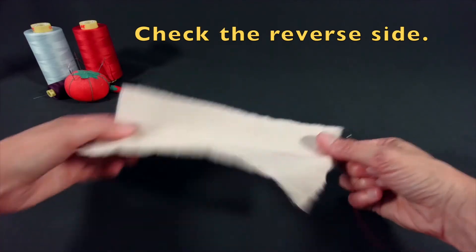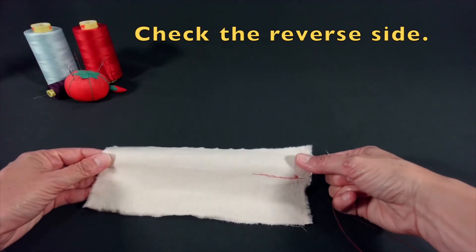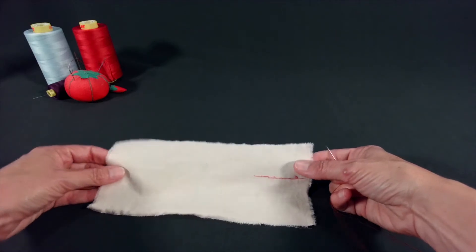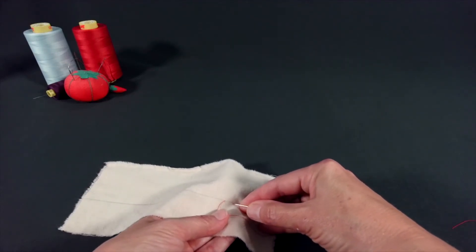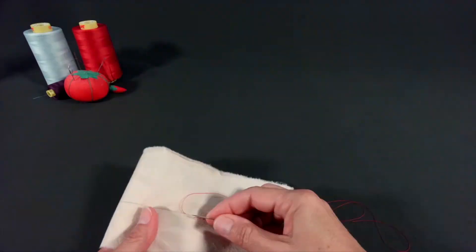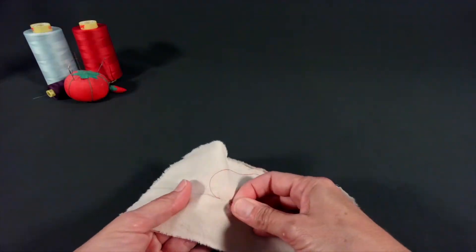Be sure to check the reverse side to make sure that you don't have any knots and that the tension is even. This stitch is more time consuming than most because it is like sewing two stitches at once.